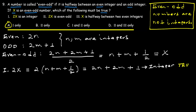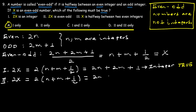Statement 1 is TRUE. Since 2x equals 2n plus 2m plus 1, which is a sum of integers, 2x is indeed an integer. Statement 2: 2x is even-odd. Since 2x equals 2n plus 2m plus 1, which is an integer, and even-odd numbers are not integers, Statement 2 is FALSE.